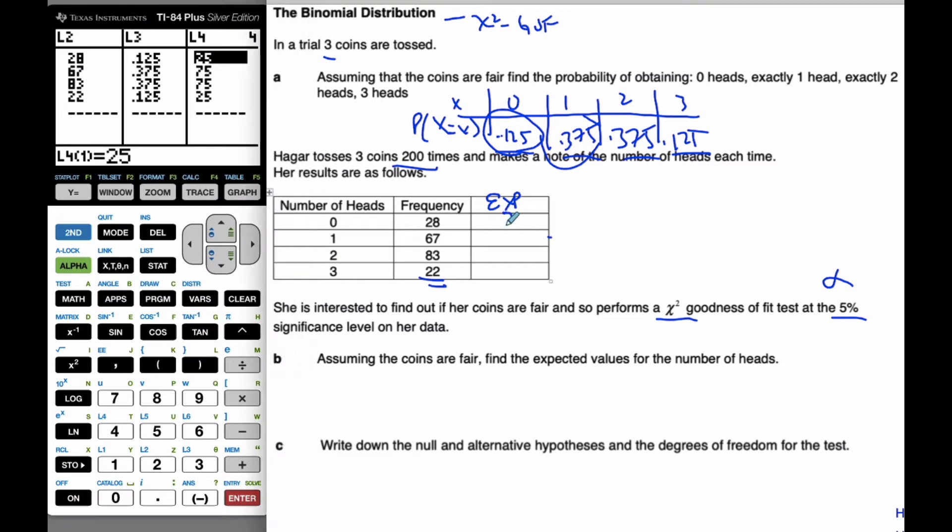And I should get 25, 75, 75, and 25. And this is in L4. This is in L2. So, assuming the coins are fair, find the expected values for the number of heads. Well, that's what I've done here. That is in L4.